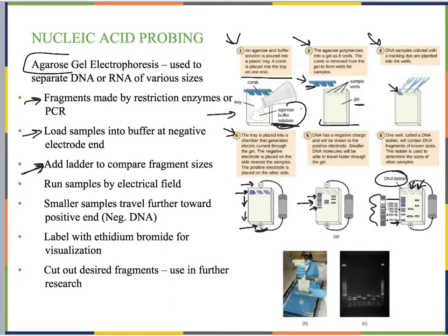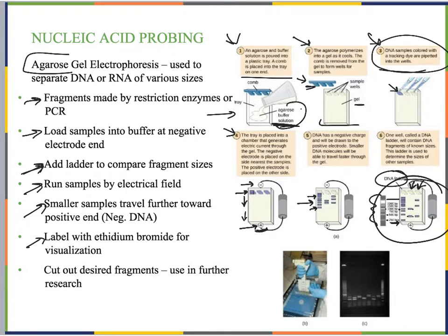The gel is labeled with ethidium bromide and placed on a light box, where it fluoresces and you can see the ladder on both sides with samples in the center, all at different lengths that can be matched to the ladder. To visualize, the colored dye added to the DNA samples travels all the way to the end of the gel as a marker to tell us when to shut off the electricity.